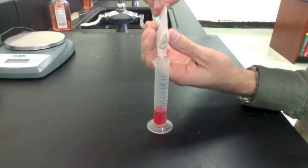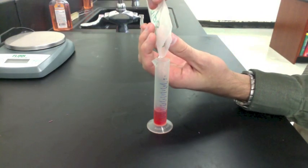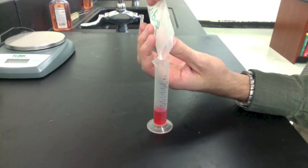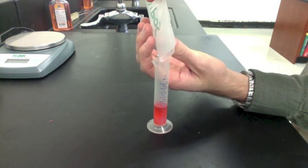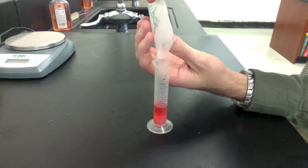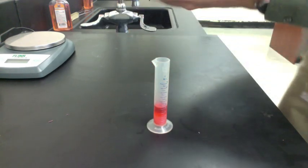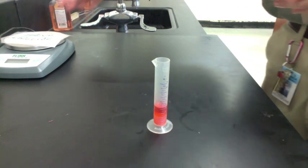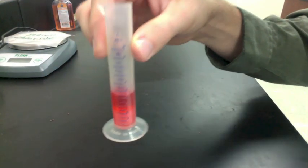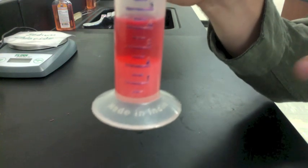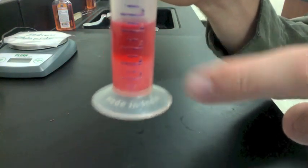Now we can add in the powdered solid, which is sodium chloride. Remember, sodium chloride is insoluble in ethyl alcohol. That means it does not dissolve. You can actually see the sodium chloride at the bottom. It is not dissolved.